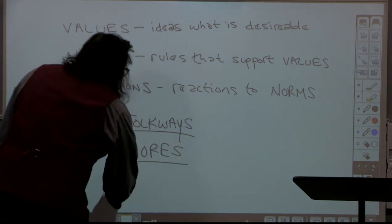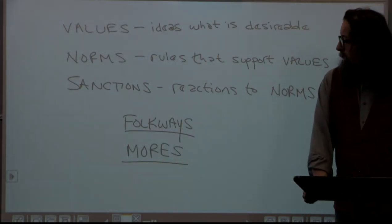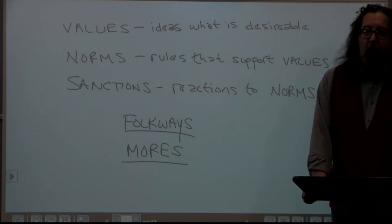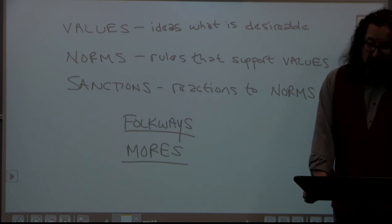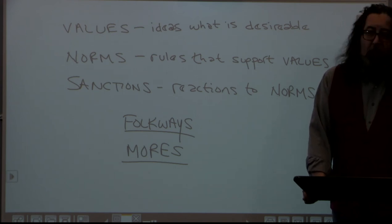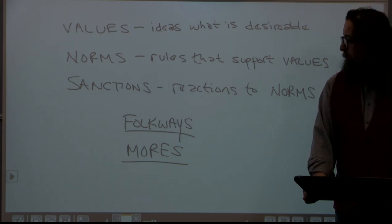Another term is mores — spelled M-O-R-E-S but pronounced 'more-ays.' These are values considered pretty critical to society — rules that are essential to our core values. When we talk about things like the Bill of Rights, the essential rules in a society which support core values, we're usually talking about mores.